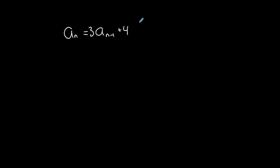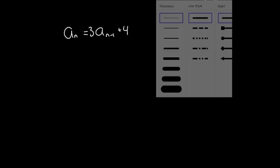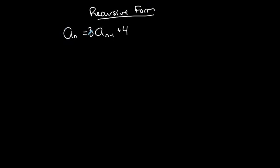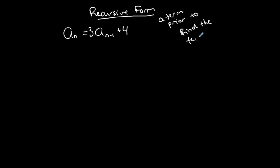I want to show this as well — this is called the recursive form of a formula of a sequence. Why is it recursive? It says the nth term is equal to three times the (n minus one)th term plus four. This means that I need a term prior to find the term that I want.